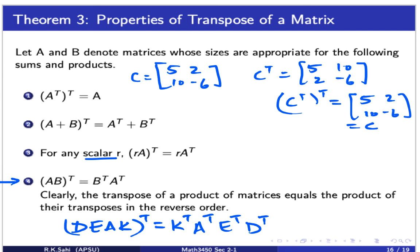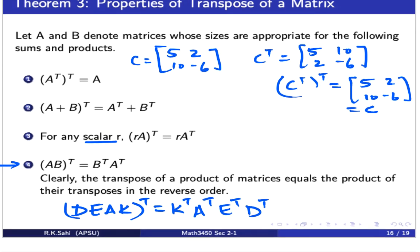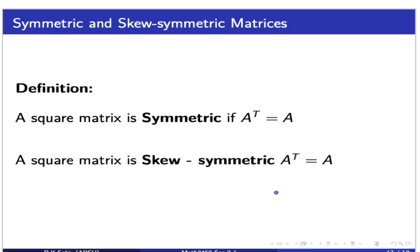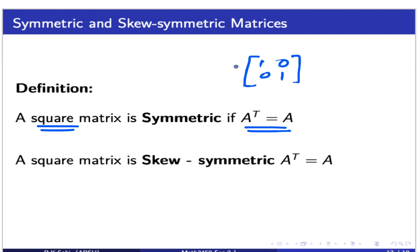Now let's define two very important matrices: the symmetric and skew symmetric matrix. A symmetric matrix is a square matrix such that A^T equals A. A classic example is the identity matrix I = [[1,0],[0,1]], since I^T = I. A square matrix is skew symmetric if A^T equals negative A.